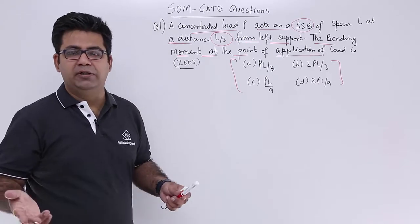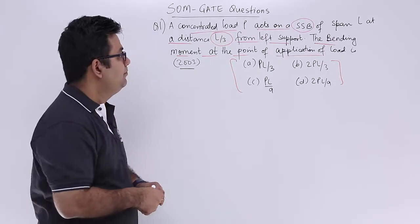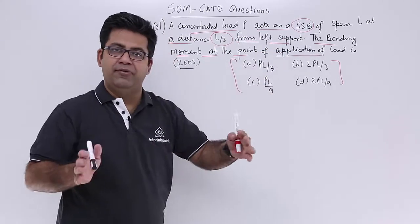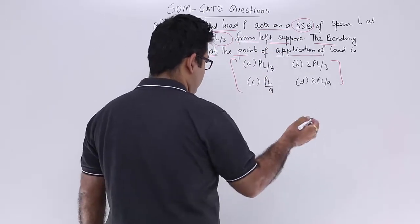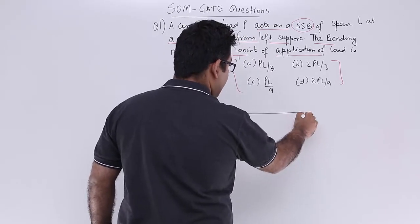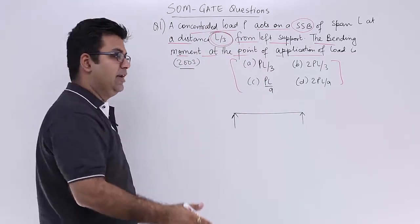There is no point in guessing, this is a very simple question. You have seen that the beam is of a simply supported type, so just draw a simply supported beam like this, and the load is being applied at L by 3 from the left support.